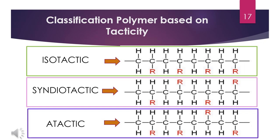Tacticity is a term used to describe the way pendant groups on a polymer chain are arranged on the polymer backbone. We encounter tacticity when dealing with vinyl polymers where R equals phenyl, methyl, alcohol, chloride, and so on. There are three types of tacticity or stereoregularity: isotactic, syndiotactic, and atactic. In isotactic polymers, all pendant groups are arranged on the same side of the chain. In syndiotactic polymers, all pendant groups are arranged on alternating sides of the chain. In atactic polymers, the pendant groups are located randomly on the main chain. Polymer chains with regular arrangement such as isotactic and syndiotactic will easily pack together into crystalline fibers, while atactic polymers cannot pack in this way.